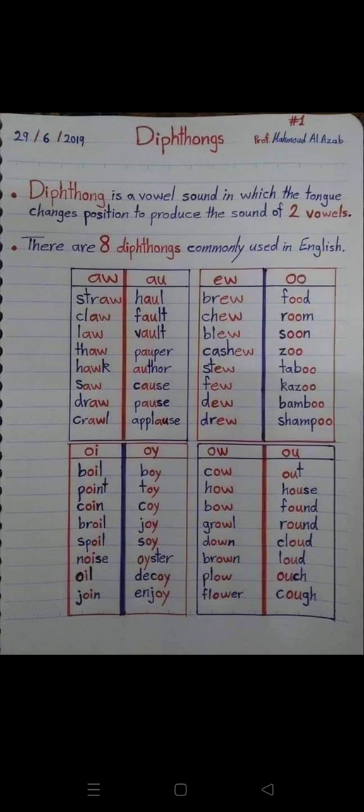OO / U sound: food, room, soon, zoo, taboo, kazoo, bamboo, shampoo.